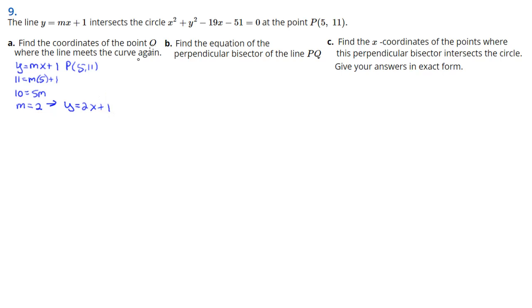Now I can find out where these two intersect. I'm going to take the 2x plus 1, that's what y equals, and substitute it into the circle equation wherever I can find a y. In this case there's only the one, so it's going to be x squared plus (2x plus 1) squared, then minus 19x and minus 51, and that equals 0.